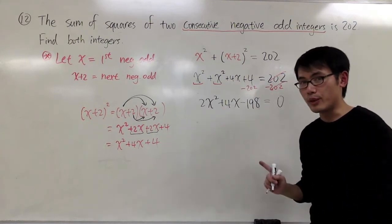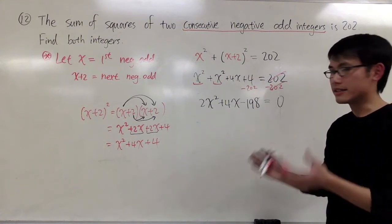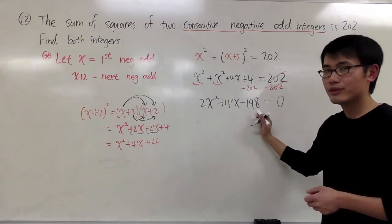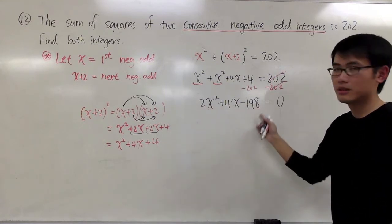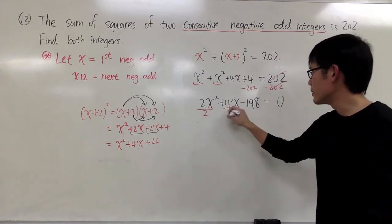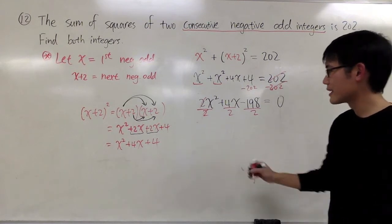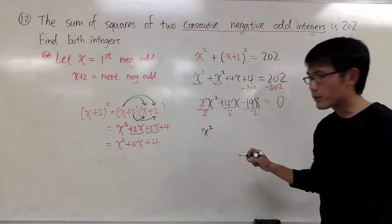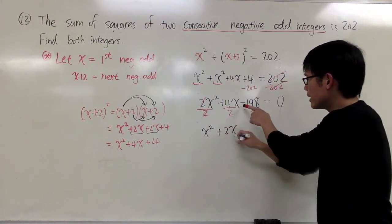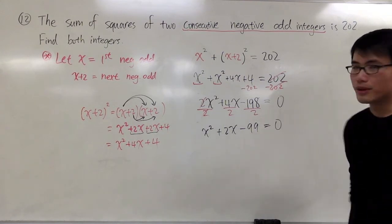So, here I have 2x squared plus 4x minus 198 is equal to 0. And since we have an equation, we can divide the equation, divide everything by a certain number. In this case, I can divide everything by 2. Because all these numbers are divisible by 2. So, let me divide by 2. This way, we'll make our calculations easier. This is x squared. That will be plus 2x. This is minus 99. That goes to 0.